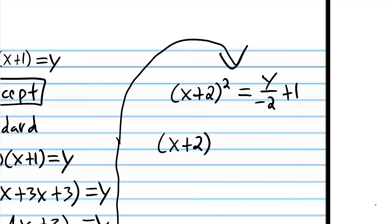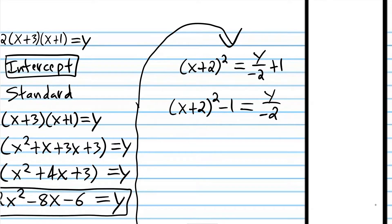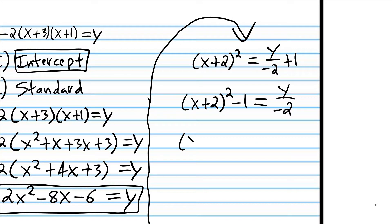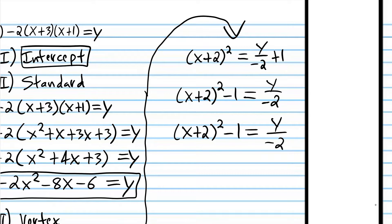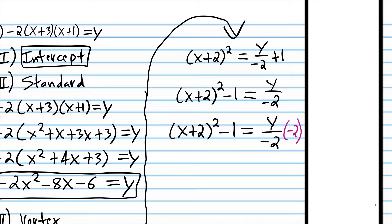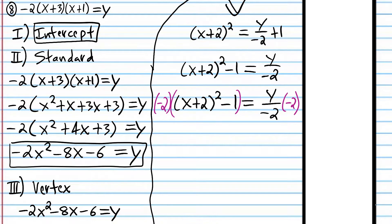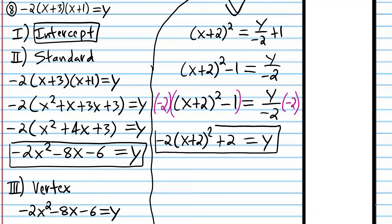We're going to subtract 1 from both sides. Then we're going to isolate y by multiplying both sides by negative 2, which will cancel out the negative 2 under the y. It's very important to understand that when you multiply the expression on the left side, you have to multiply the entire thing. The right side is just left with y, and using the distribution rule: negative 2 times x plus 2 squared, and negative 2 times negative 1 is positive 2. So that is vertex form.